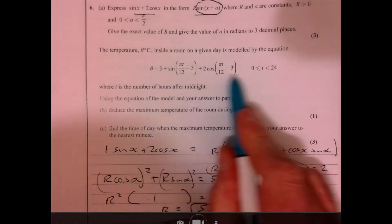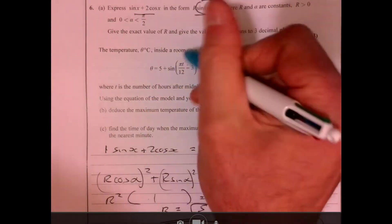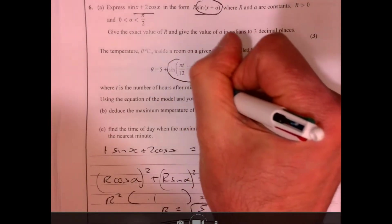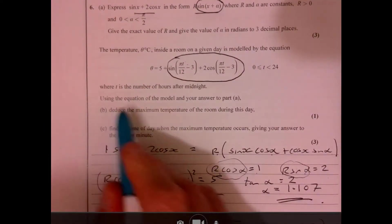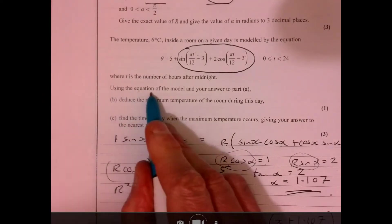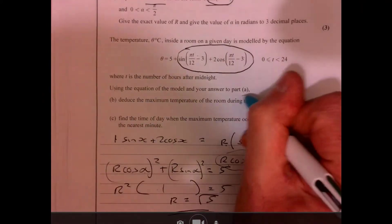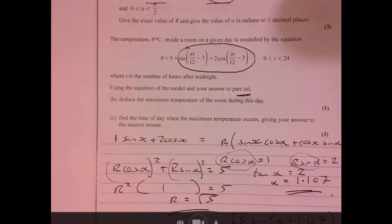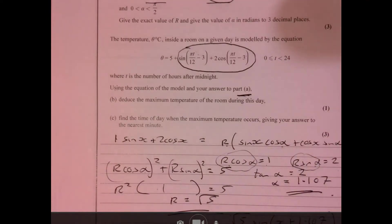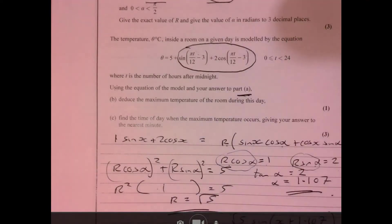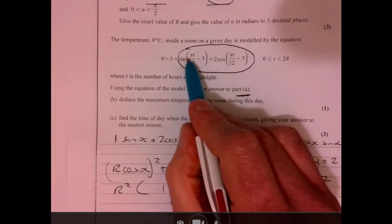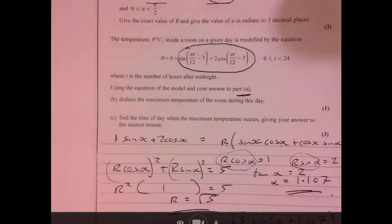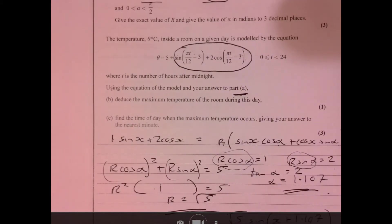Now people tend to get a little bit confused by this bit here. There's lots of clues. It says down here, use the equation of the model and your answer, what we've just done. It's trying to tell us what to do. It's giving us some context here, so this is the x bit.